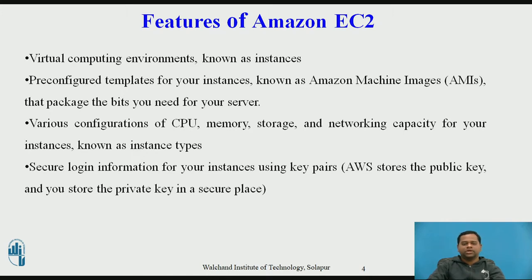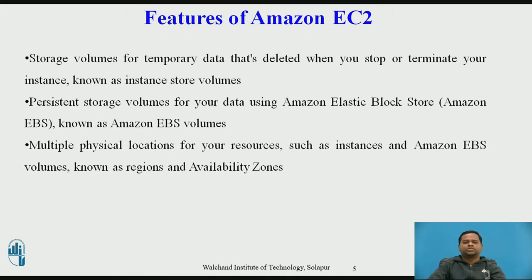By using EC2 service, you can configure CPU, memory, storage devices, and networking capacity for your instance types. Secure your login information for your instances using key pairs — using public and private keys you can secure your account. Storage volumes for temporary data that is deleted when you stop or terminate your instances are known as instance store volumes. You also get persistent storage volumes for your data using Amazon Elastic Block Store, that is Amazon EBS. You also get multiple physical locations for your resources such as instances and EBS volumes, known as regions and availability zones.